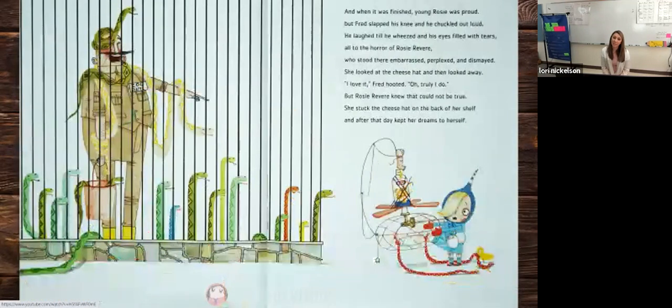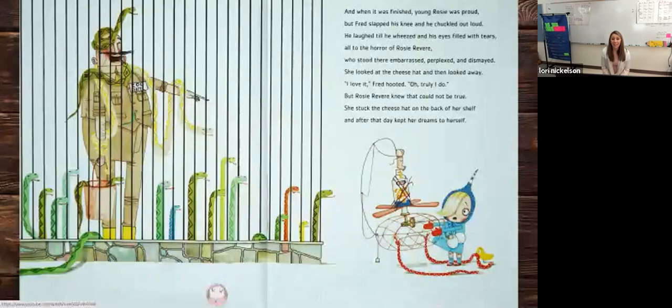And when it was done, Rosie was proud. But Fred slapped his knee and he chuckled out loud. He laughed till he wheezed and his eyes filled with tears, all to the horror of Rosie Revere, who stood there embarrassed, perplexed and dismayed. She looked at the cheese hat and then looked away. I love it, Fred hooted. Oh, truly I do. But Rosie Revere knew that could not be true. She stuck the hat on the back of her shelf. And after that day, she kept her dreams to herself.